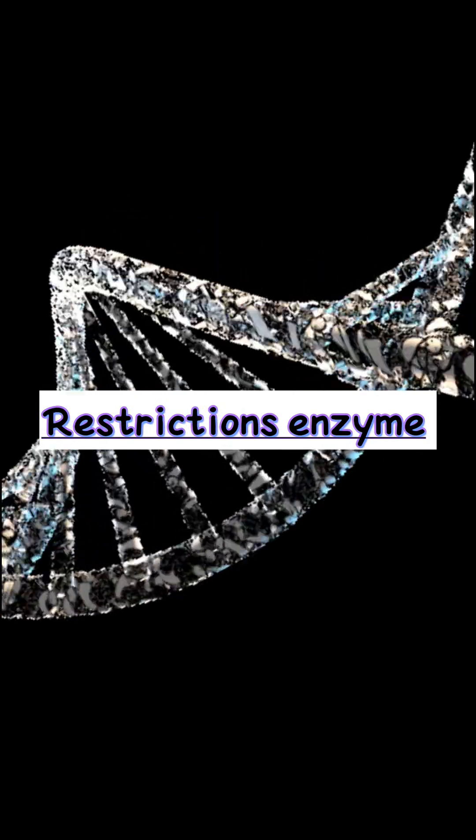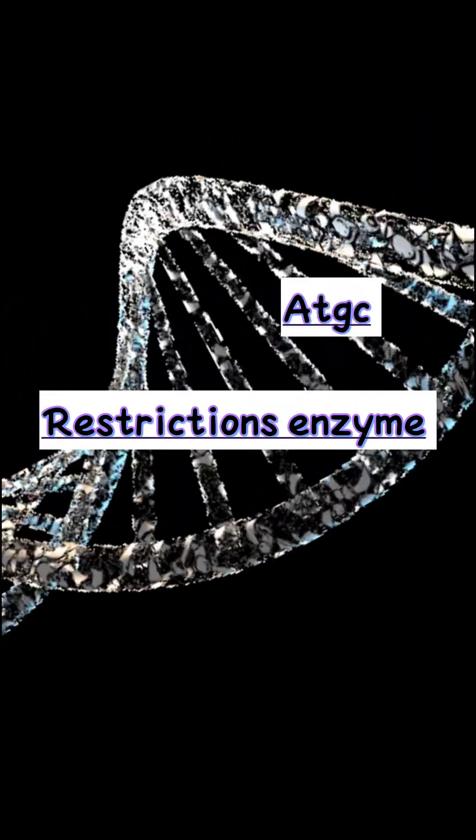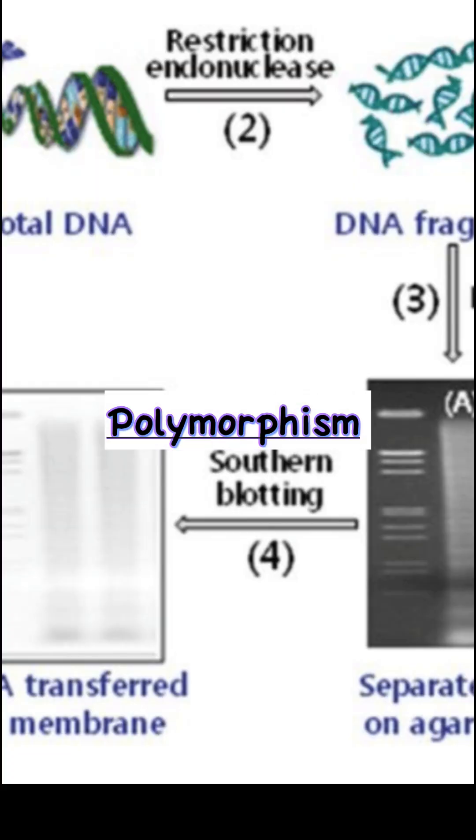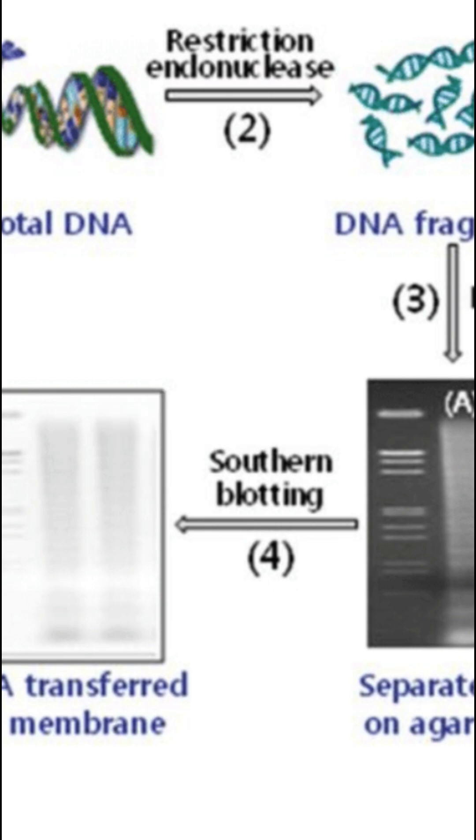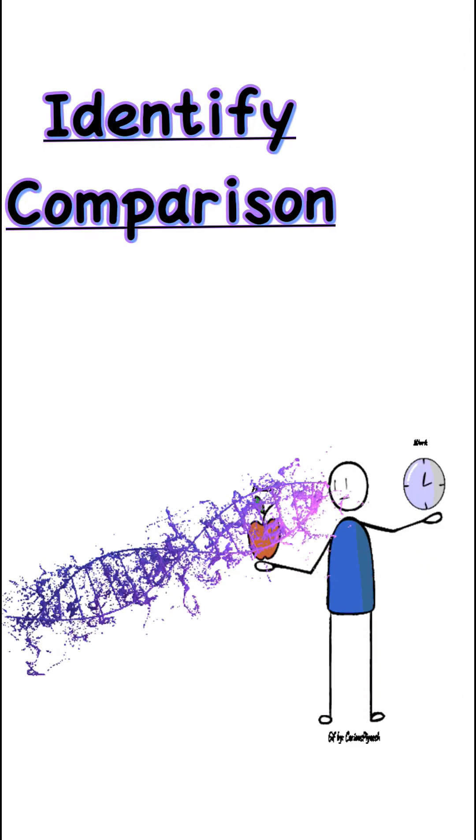These enzymes cut the DNA at specific recognized sequences, and variations in these sequences, the polymorphism, leads to different fragment sizes, allowing for identification and comparison of DNA samples.